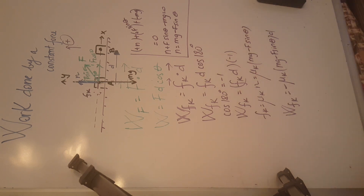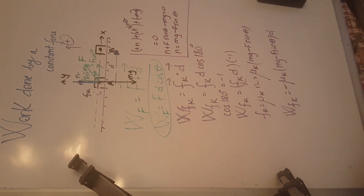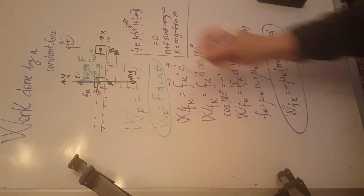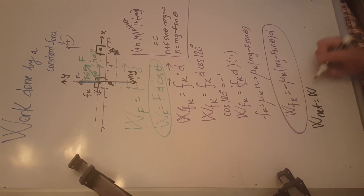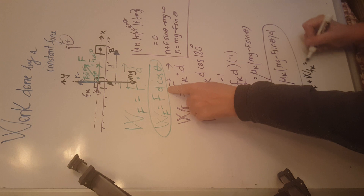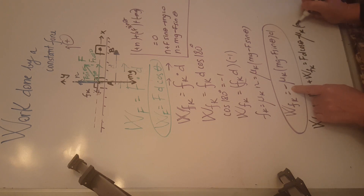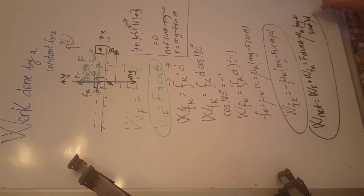We circle the work done by force F — that is Fd cosine theta — and circle the work done by friction Fk. The net work is the sum of these two: W_net equals Fd cosine theta minus mu_k times (mg minus F sine theta) times d. That is our final answer for this problem.